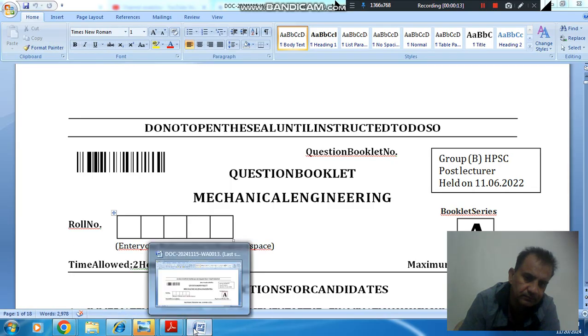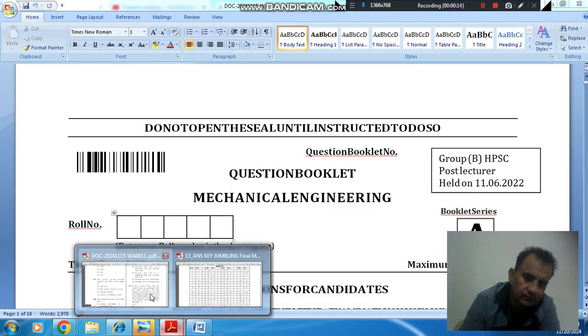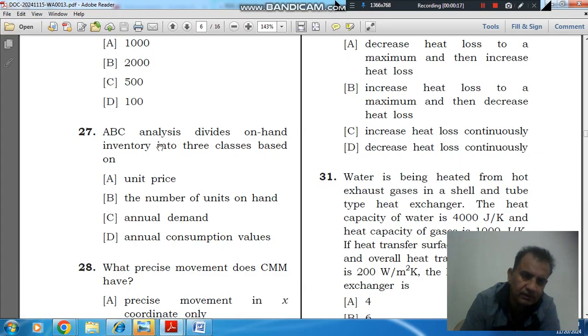Question number 27: ABC analysis divides on-hand inventory into three classes based on - option A: unit price, option B: the number of units on hand, option C: annual demand, and option D: annual consumption value.